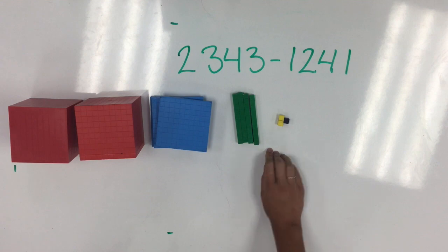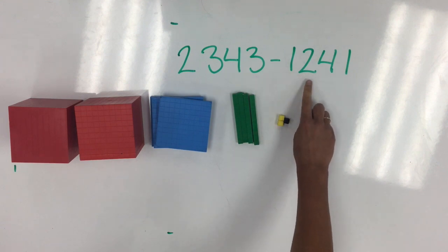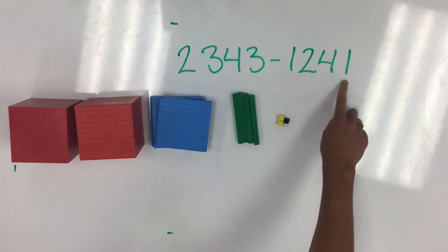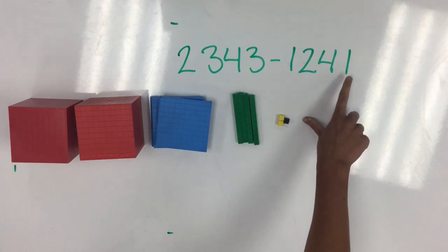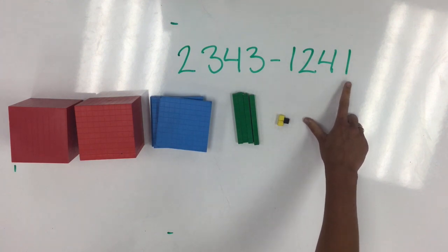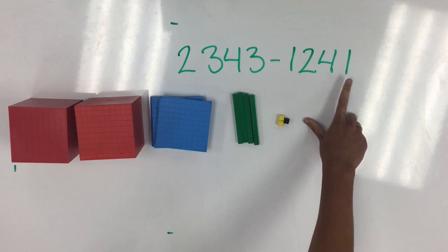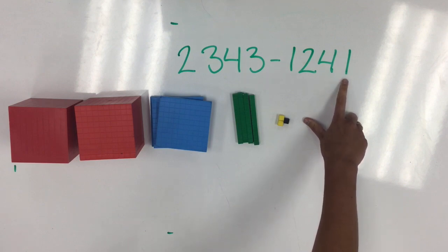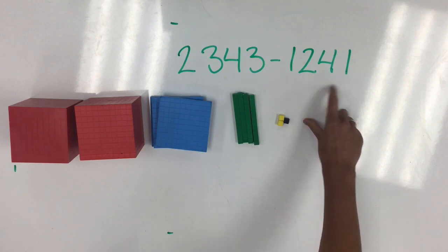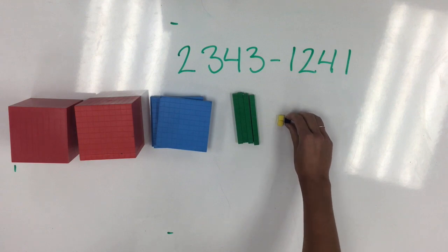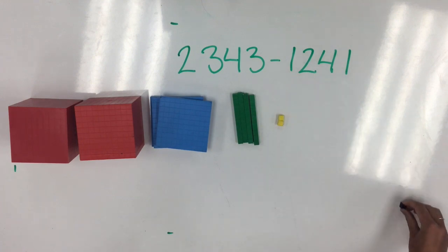Here, we're subtracting 1,241. We always want to start with the ones place with our smallest digit. Here, we have one in the ones place, so I'm going to move one away from my starting number.